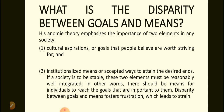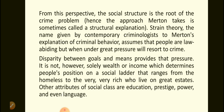In other words, there should be means for individuals to reach the goals that are important to them. Disparity between goals and means fosters frustration, which leads to strain. From this perspective, the social structure is the root of the crime problem. Hence, the approach Merton takes is sometimes called a structural explanation. Strain theory — the name given by contemporary criminologists to Merton's explanation of criminal behavior — assumes that people are law-abiding, but when under great pressure, will resort to crime.